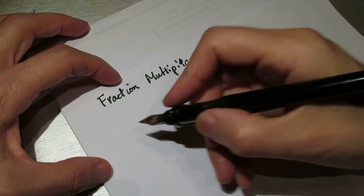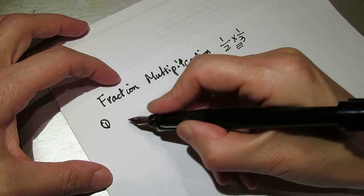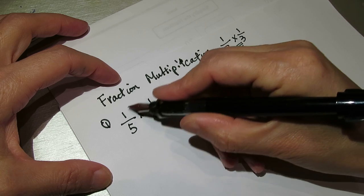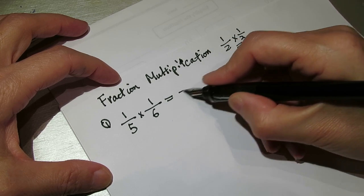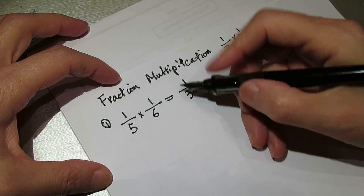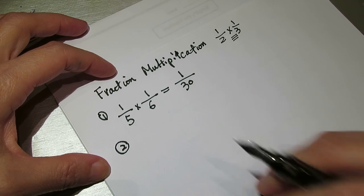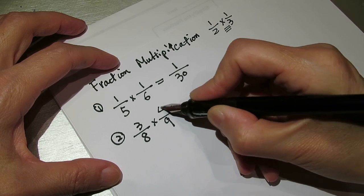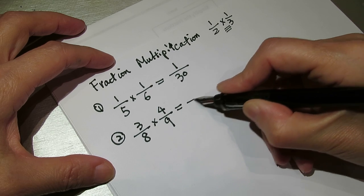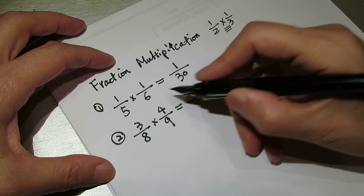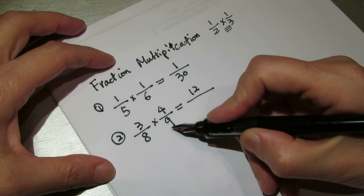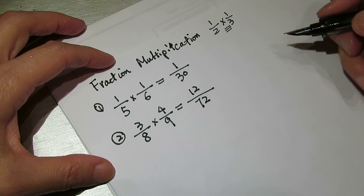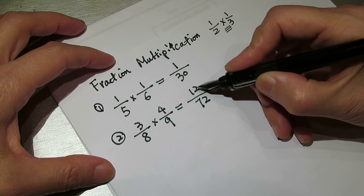So first, the upper part multiply and lower part multiply. So it becomes 31 — 1 over 30. The second one: so the upper part we multiply, which is 12, and the lower part, the denominator, we multiply, which becomes 8972.